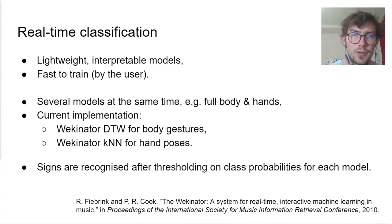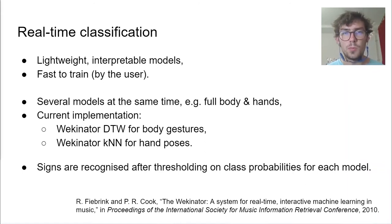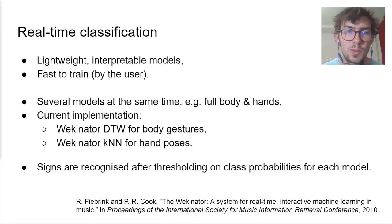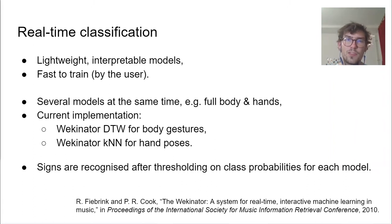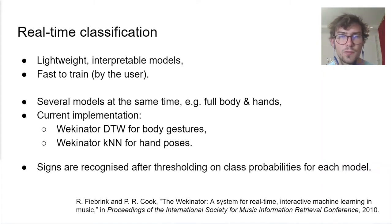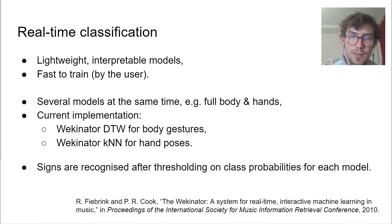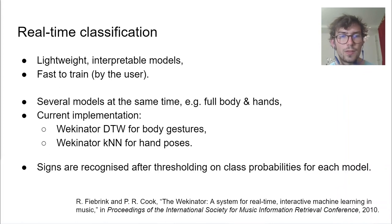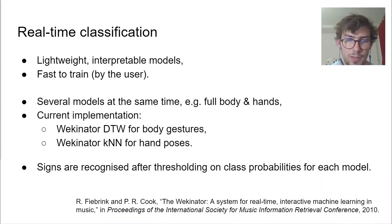Let's now take a look at the classification layer. For the system to recognize signs, we decided to focus on lightweight, interpretable models that can be trained fast and identify signs performed in real time. The identification is a simple classification process, in which the classifier predicts the class of gestures or poses performed among a set of previously learned classes. Several models are used simultaneously because sound painting uses different types of signs — some are gestures at the full body scale, some are poses at the hand scale. I used the companion software Wicinator, choosing a k-nearest neighbor model for the hands and a dynamic time warping model for the full body, each running separately. At the output of Wicinator comes the class probabilities, from which signs are identified after simple thresholding.